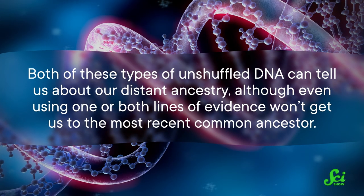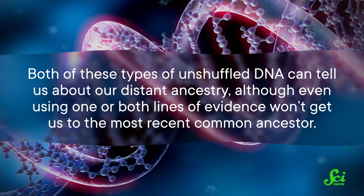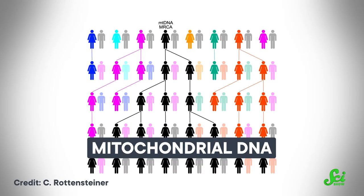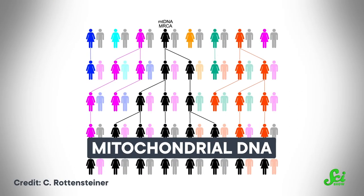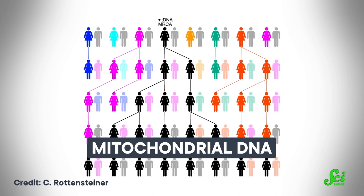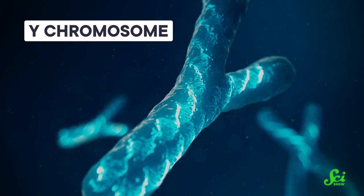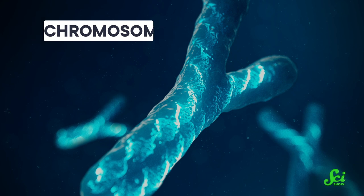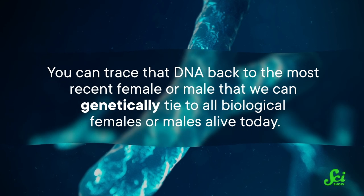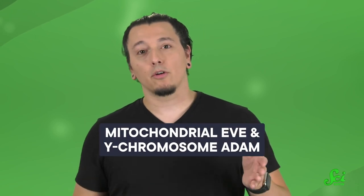Both of these types of unshuffled DNA can tell us about our distant ancestry, although even using one or both lines of evidence won't get us to the most recent common ancestor, for reasons we'll explain later. For biological females, we can look at mitochondrial DNA, which gets passed down directly from a mother to all of her offspring, since the offspring's mitochondria originate from within their mother's egg cell. For biological males, we can study the Y chromosome, because it's passed from fathers to their sons and is also conserved basically intact. So you can trace that DNA back to the most recent female or male that we can genetically tie to all biological females or males alive today.